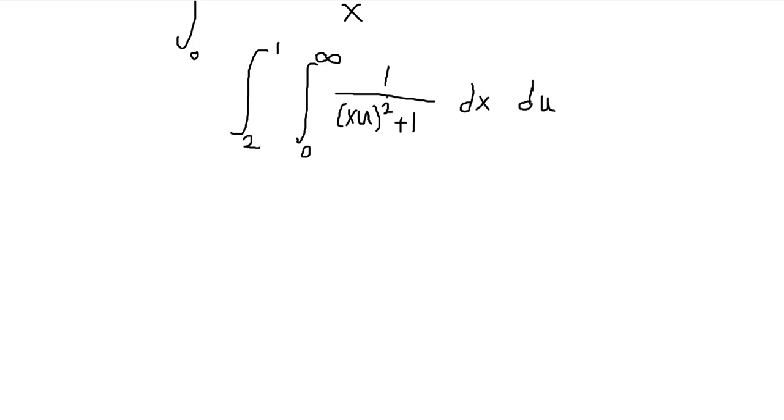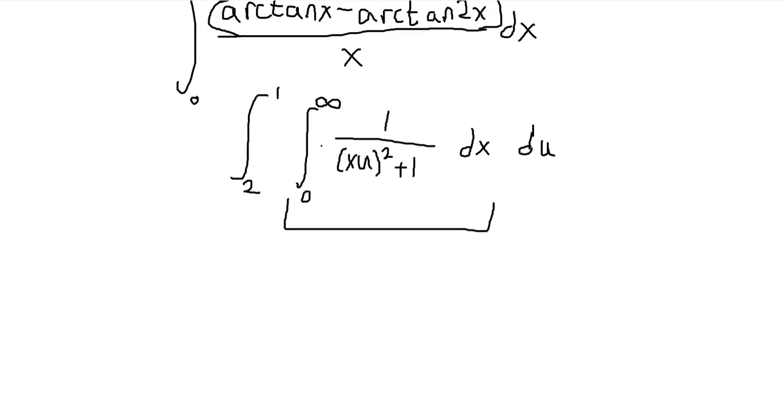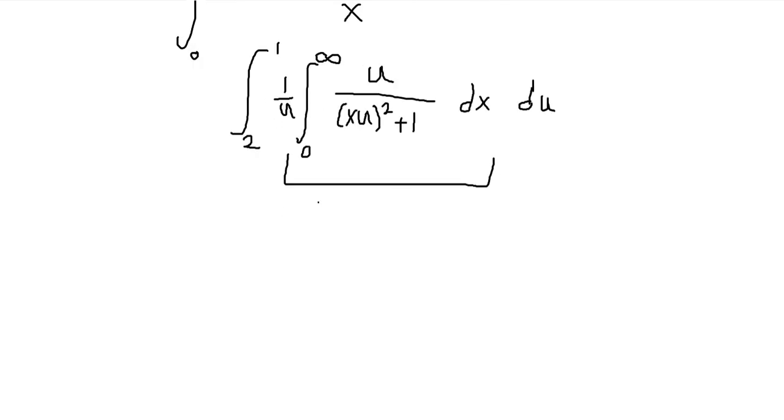So now we have the x integral on the inside. We can do the same trick of multiplying by u and 1 over u. So here in the x integral, the u is a constant, so I can pull it out of that integral. So I get 1 over u, and then this will just integrate as arctangent of x times u, which is the exact same function we had before,